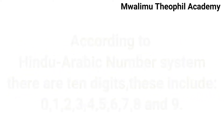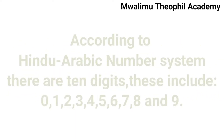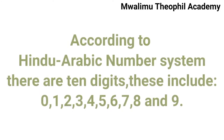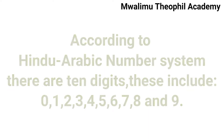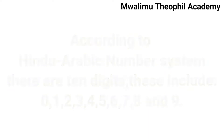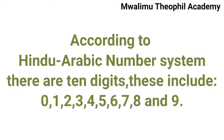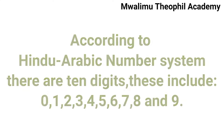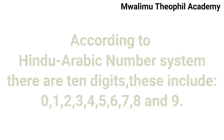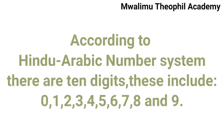According to the Hindu-Arabic number system, we have a total of 10 digits. These digits include 0, 1, 2, 3, 4, 5, 6, 7, 8, and 9. If you count all of these mentioned digits, you get a total of 10 digits.